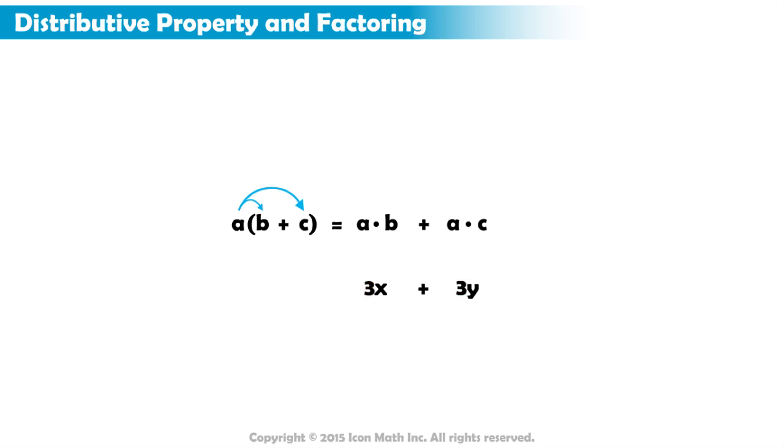We take out the common factor 3 and we write it outside the parentheses. Then, inside the parentheses, we sum together the variables x and y. Notice if we distributed the 3 back into the parentheses, we get 3x plus 3y again.